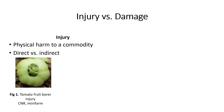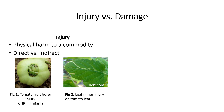Figure 1: Tomato fruit borer injury is an example of direct injury. And Figure 2: Leaf miner injury on tomato leaf is an example of indirect injury.